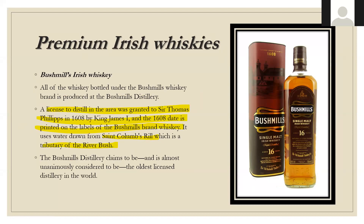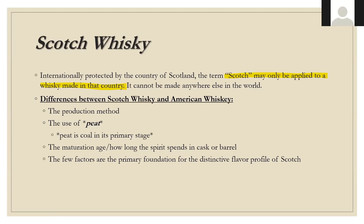Scotch whiskey has quite a few more categories and can be a little convoluted. It's an internationally protected name — you can only use 'Scotch' on whiskey made in Scotland. The major differences between Scotch and other whiskeys involve the use of peat. Peat is basically coal in its primary stage. The major differences come down to production method, use of peat, the maturation length, and what the casks have previously been used for — these are the primary foundations for the distinctive flavor profiles found in Scotch.